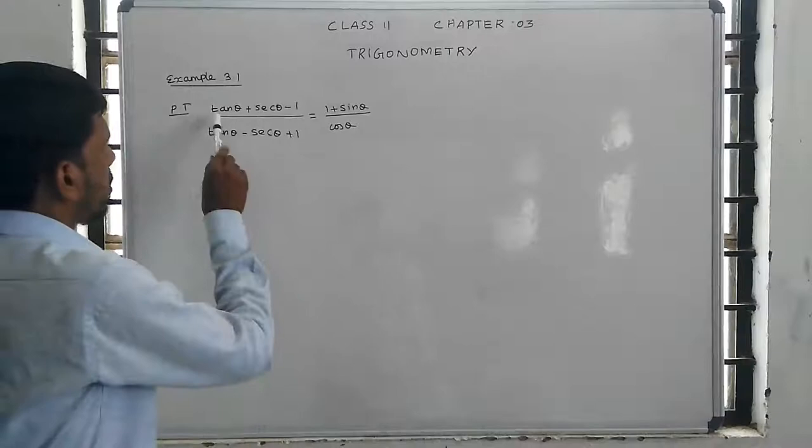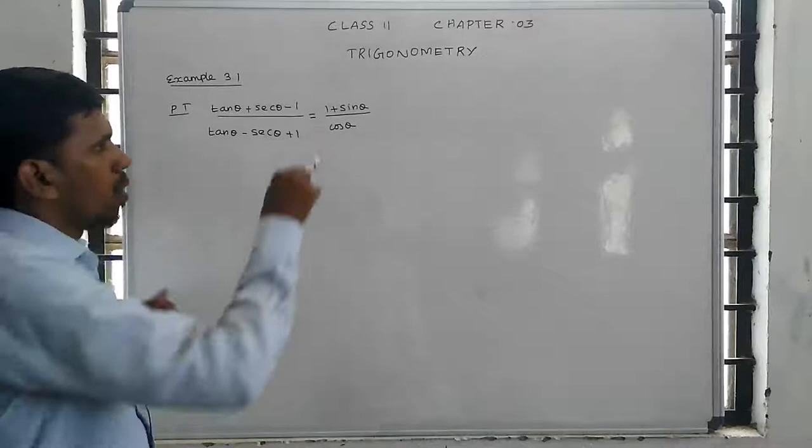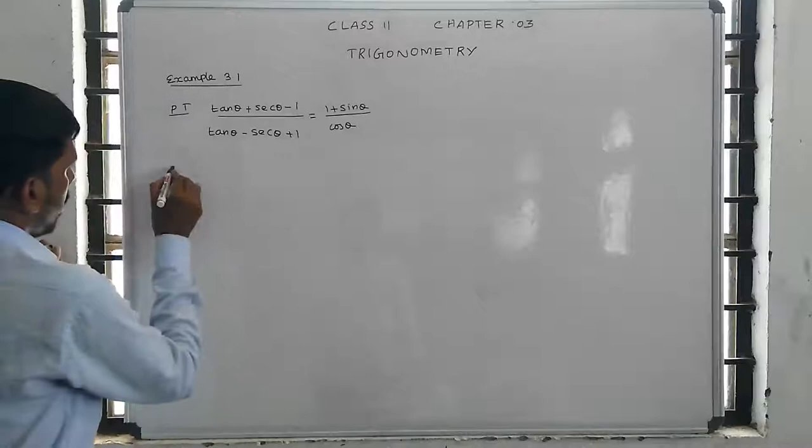Assalam alaikum students. Example 3.1: prove that tan theta plus secant theta minus 1, divided by tan theta minus secant theta plus 1, equals 1 plus sin theta divided by cos theta.